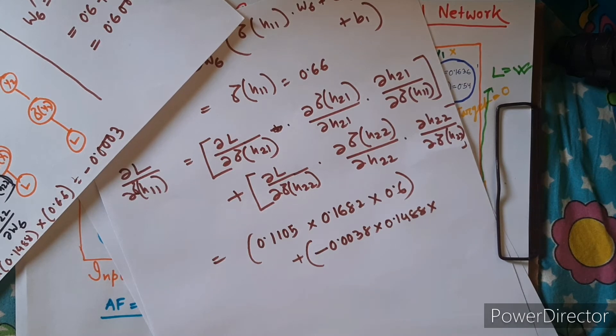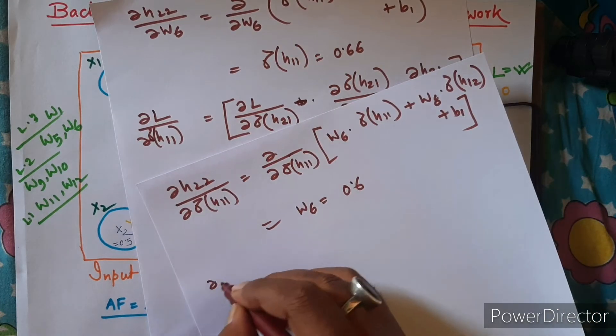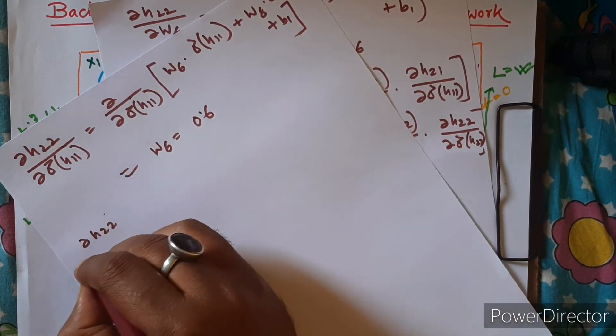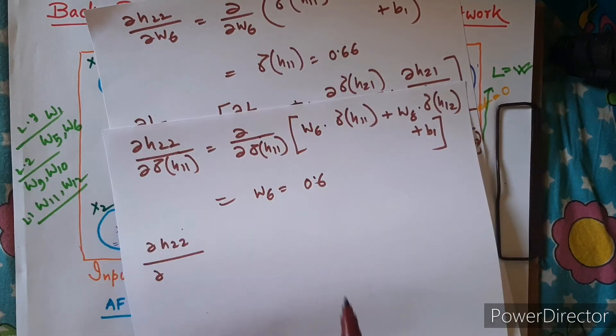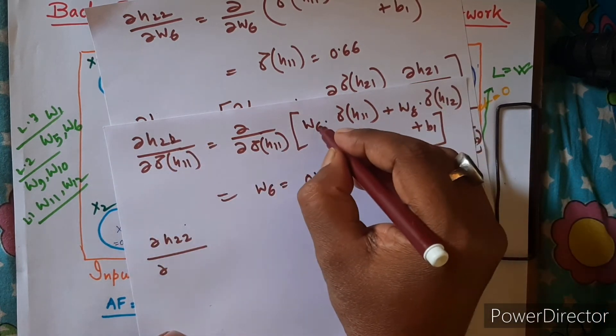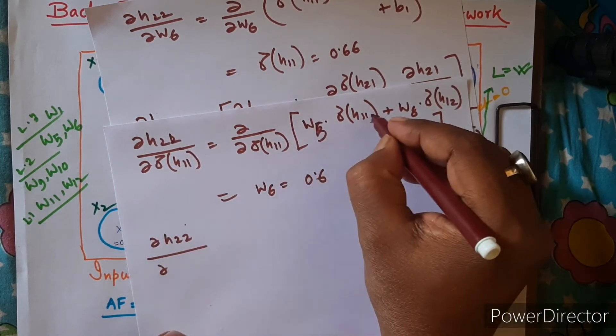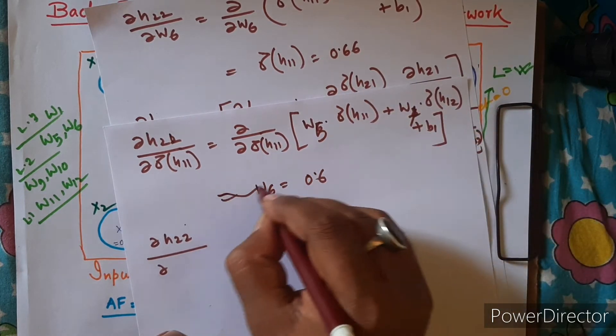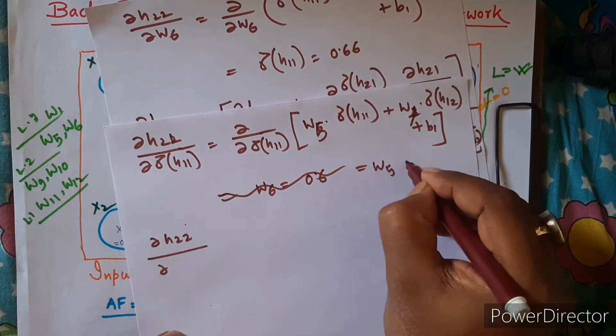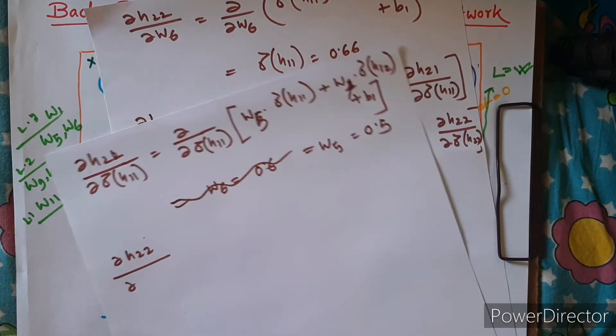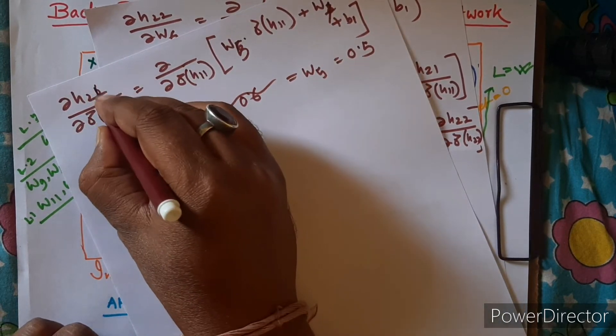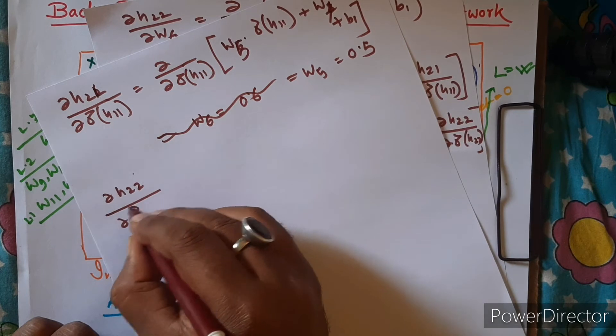So let's calculate the last portion. It will be actually H21, so this will be W5 sigma, and this will be W7. So this will be actually W5, is equal to 0.5. Sorry, this is very long one, so I am doing mistakes. So now H22 will be calculated.